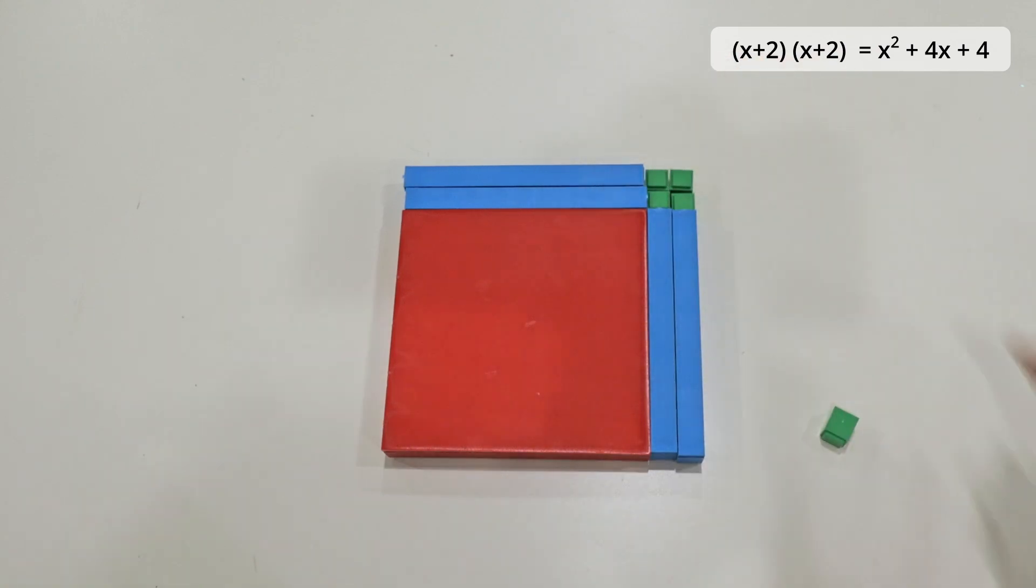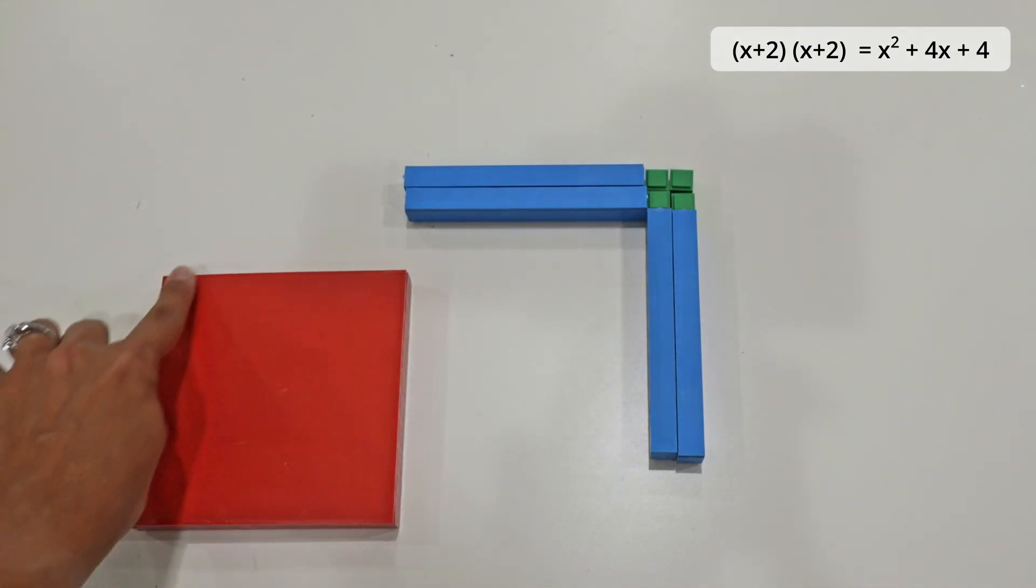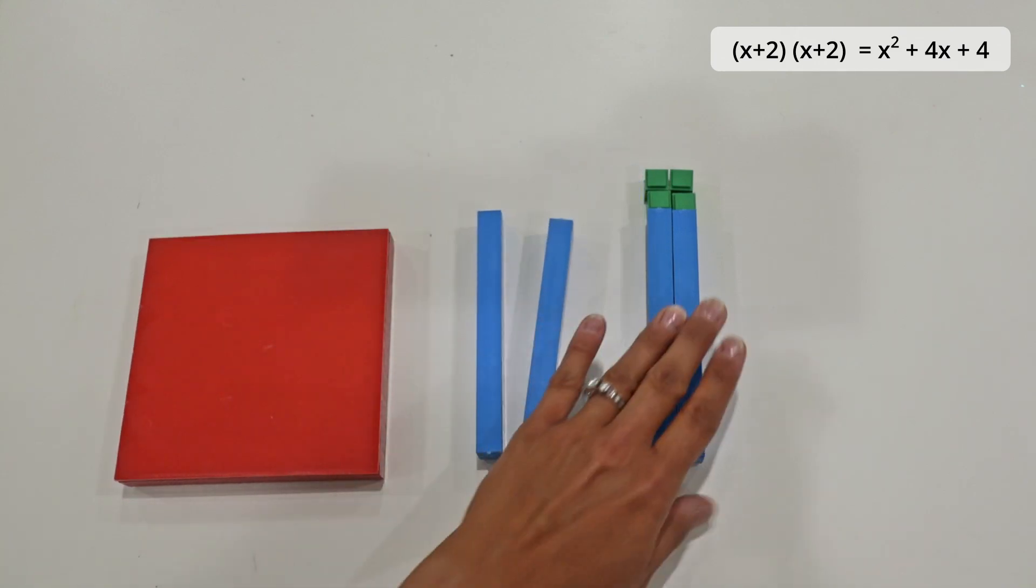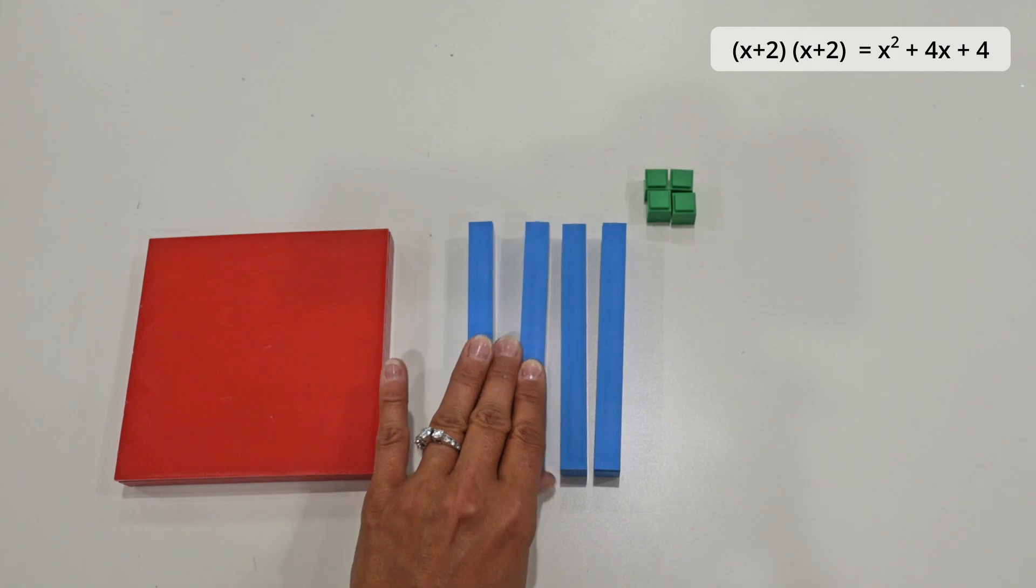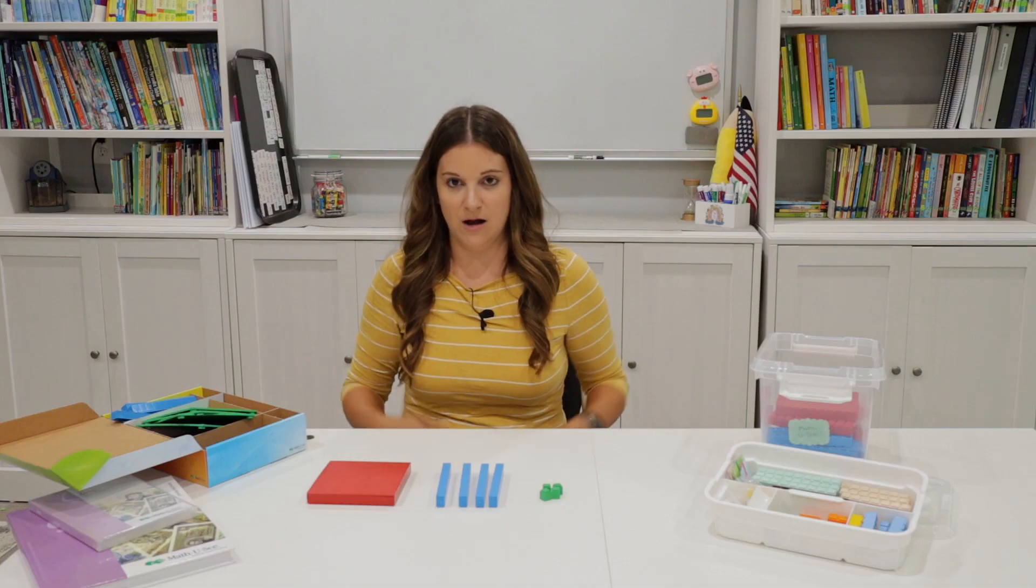And so now I can sort of break up this again to solve for it. My answer is going to be x squared because it's squared. So x squared plus 4—I'm going to say 4x. That'll get to be a part of that algebra level. So 4x plus 4. So that's how I would break down that problem.